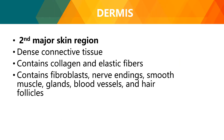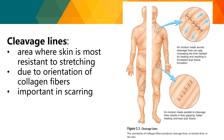The next layer is the dermis, the second major skin region. It is composed of dense connective tissue containing collagen and elastic fibers. It contains fibroblasts, nerve endings, smooth muscle, glands, blood vessels, and hair follicles. Cleavage lines or tension lines in the skin are more resistant to stretch due to the orientation of collagen fibers, and they are important in scarring.